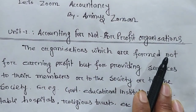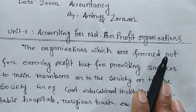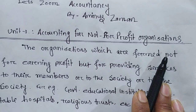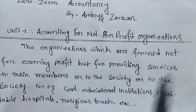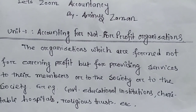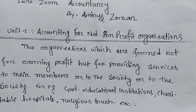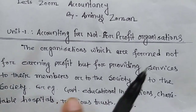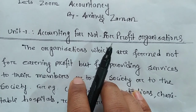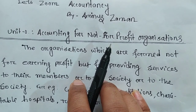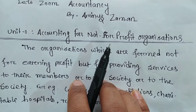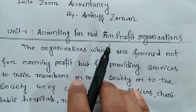Accounting for Not-for-Profit Seeking Organizations — what do you mean by Not-for-Profit Seeking Organizations? On the basis of profit, organizations can be categorized into two parts. The first one is Profit Seeking Organizations and the other is Not-for-Profit Seeking Organizations.